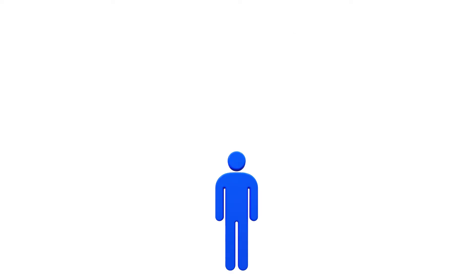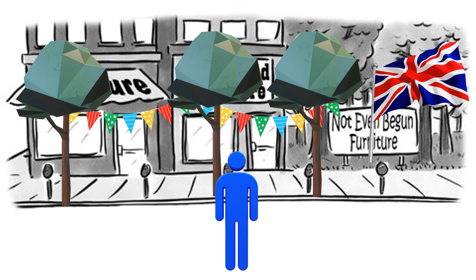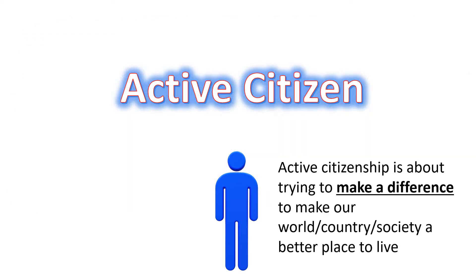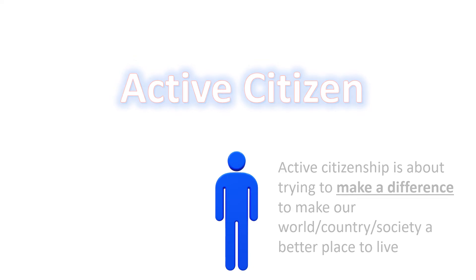This is Jacob. Jacob lives in the same area and community as Sam, but we wouldn't necessarily call him a citizen — we would call him an active citizen. To be an active citizen is about wanting to make a difference to the world, the country, the society, and the community you live in, making it a better place for other people. There are lots of ways you can be an active citizen.